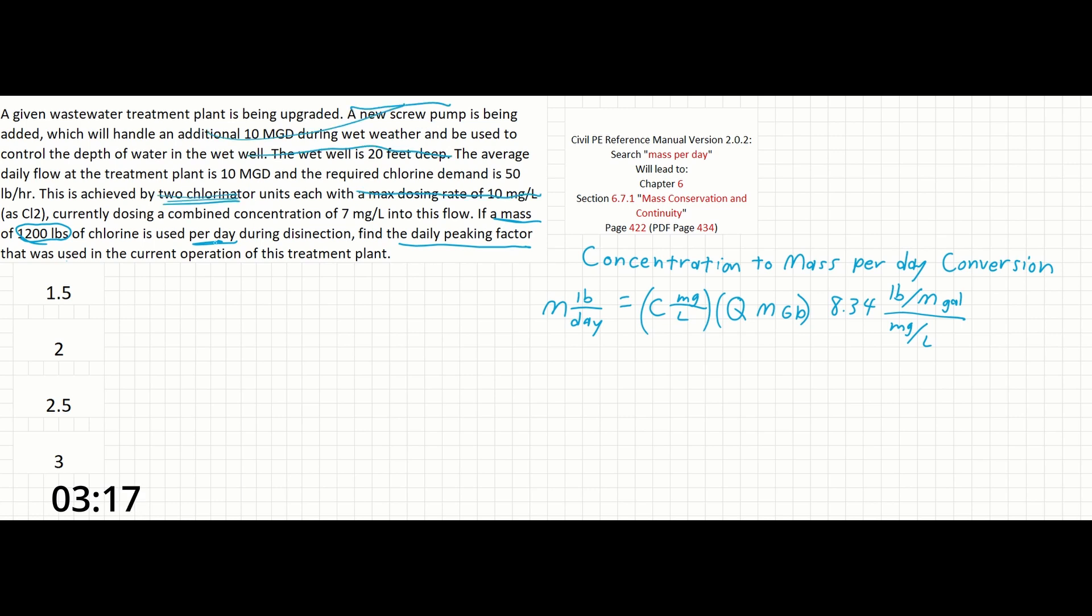Or the max dosing rates of the two chlorinator units. We don't even necessarily need the information about the chlorine demand in pounds per hour, since we are given the chlorine demand in pounds per day.